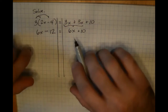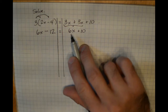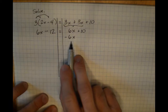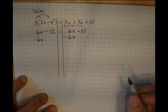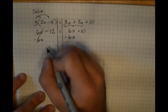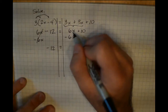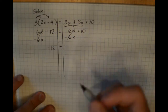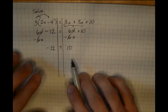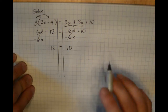I want my variable term on the left, so I subtract 6x from both sides. On the left, 6x minus 6x is 0x — eliminated — leaving just negative 12. On the right, 6x minus 6x is also eliminated, leaving just 10. So I now have the statement negative 12 equals 10, and that is not true — it will never be true.